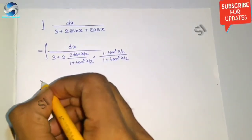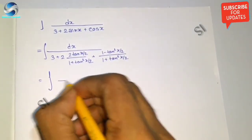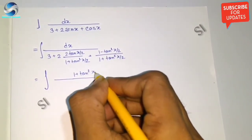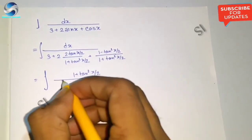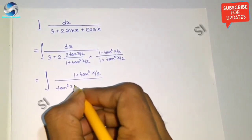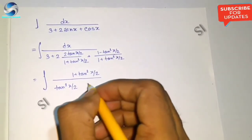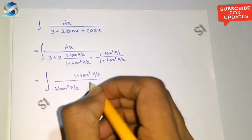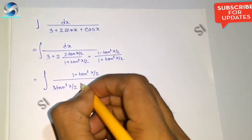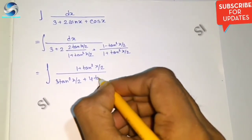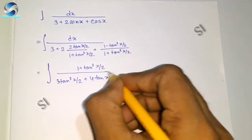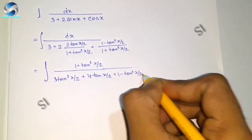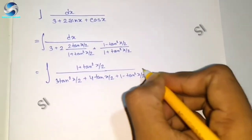That equals integration of 1 plus tan²(x/2) divided by 3 tan²(x/2) plus 4 tan(x/2) plus 1 minus tan²(x/2) plus 3.